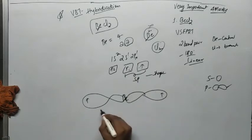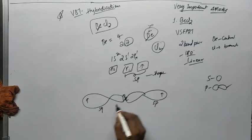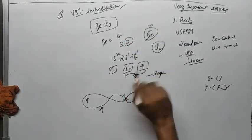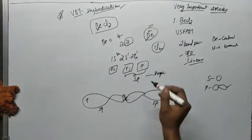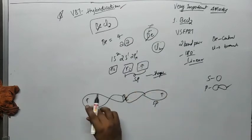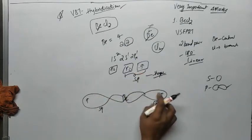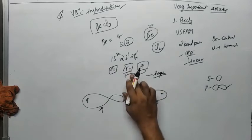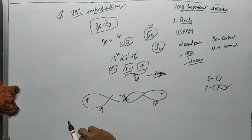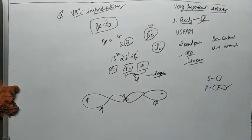We should not distinguish which hybrid orbital is s or p anymore. As per hybridization, these two orbitals are intermixed to have the same energy and same shape. Both sp hybrid orbitals each have one electron. This is an example of sp hybridization.